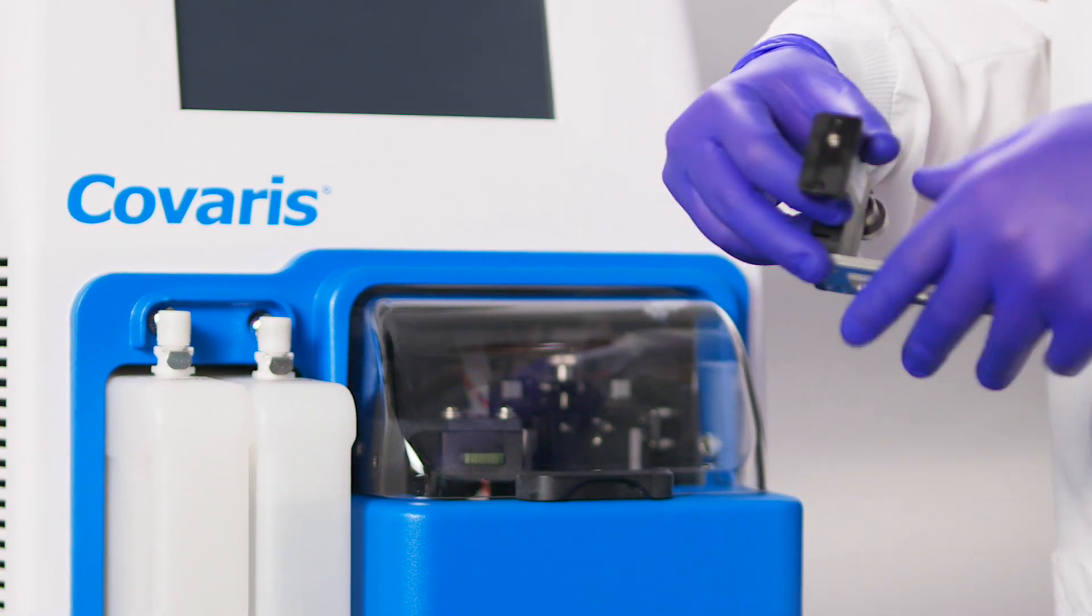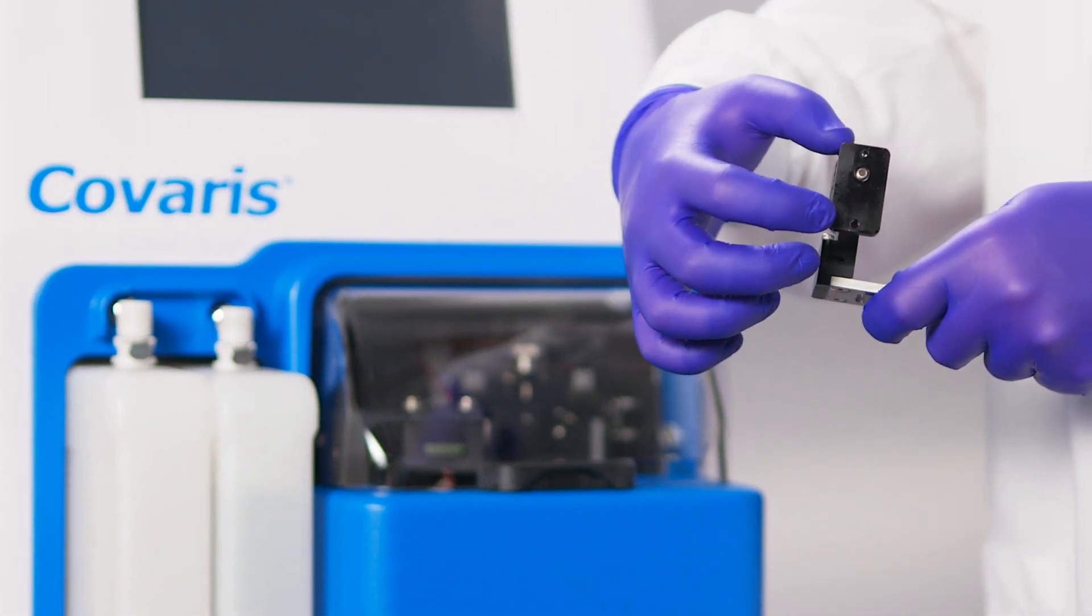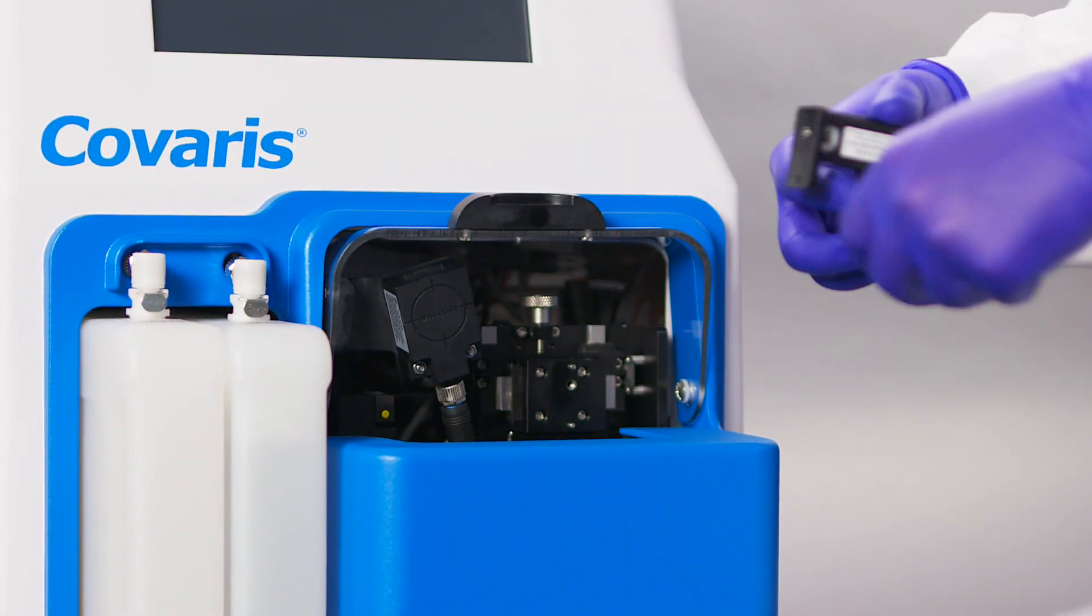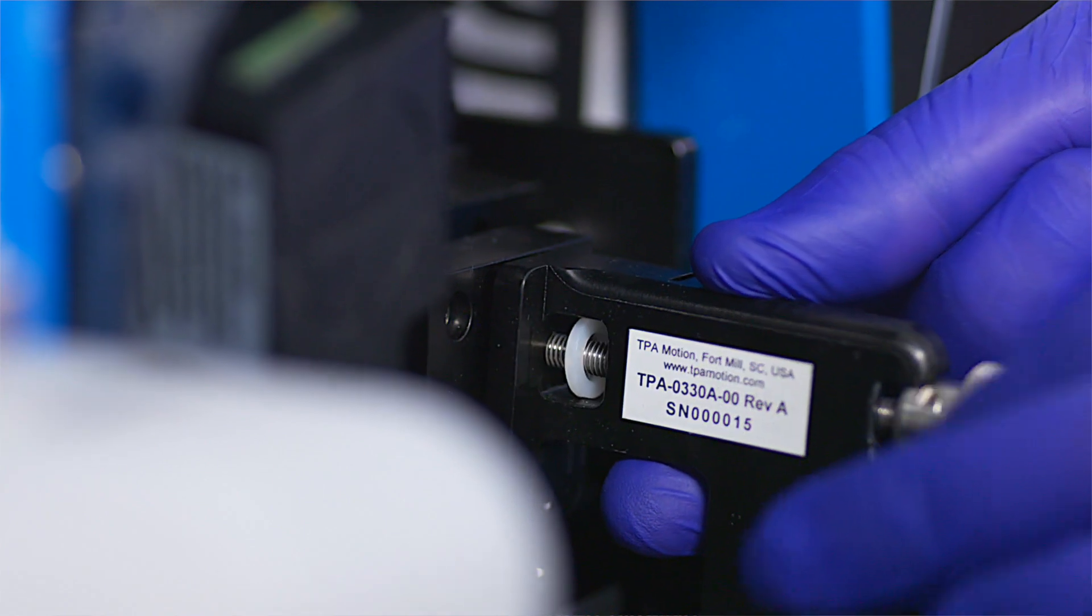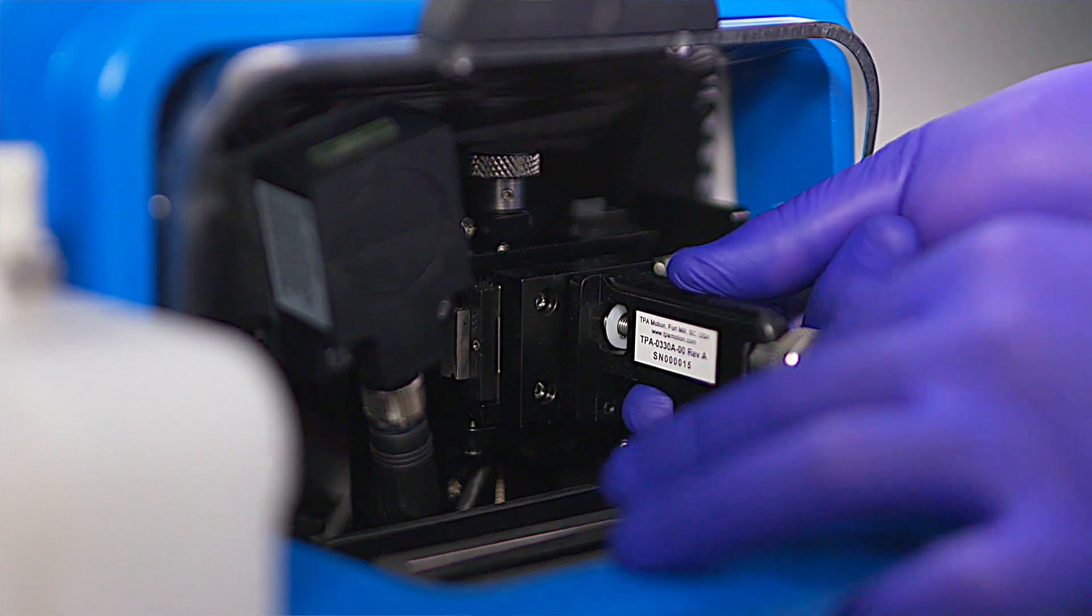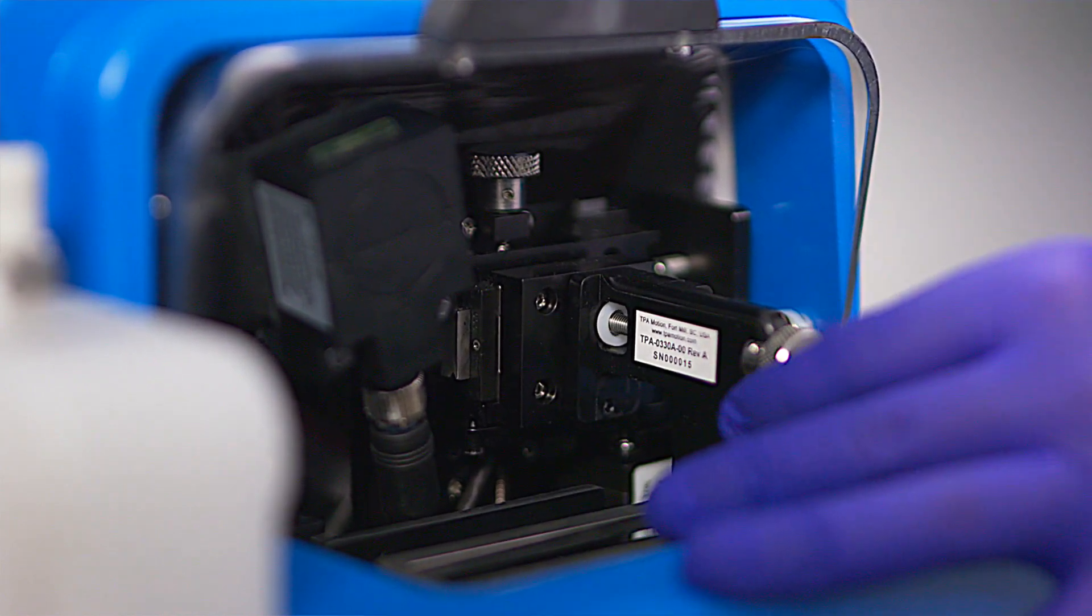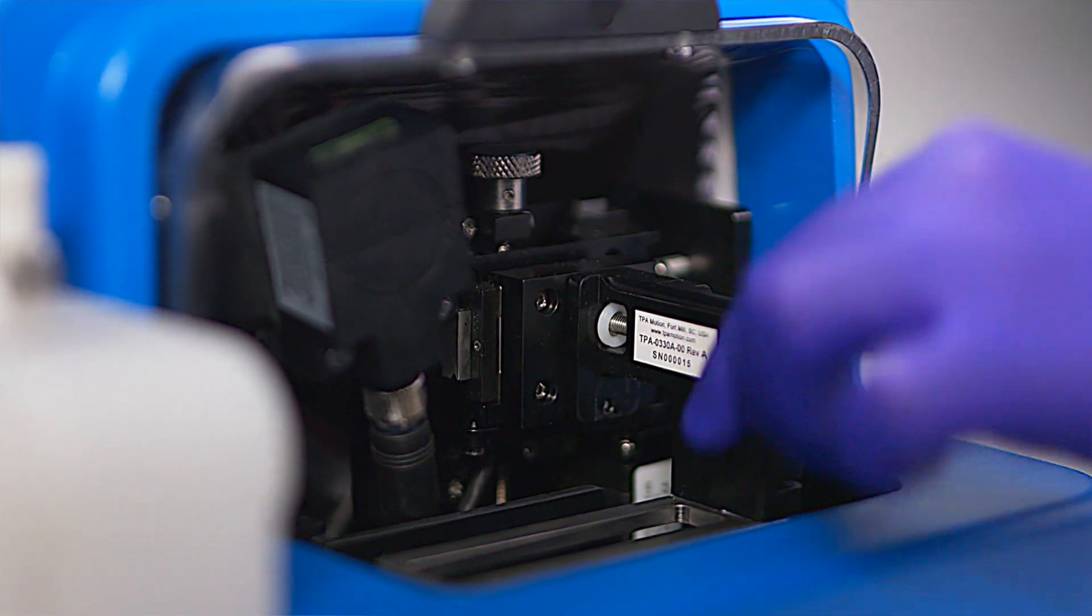Locate the sample tray assembly in the accessory box. Lift the safety cover to open. Slide the sample tray assembly locating pinholes onto the pins of the motion system behind the safety cover. Thread the sample tray assembly's thumb screw into the motion system and snug it finger-tight.